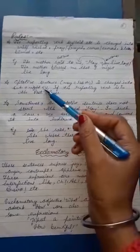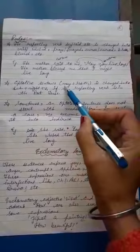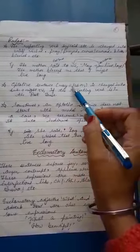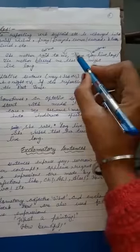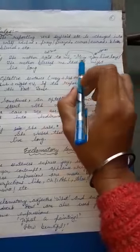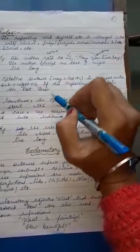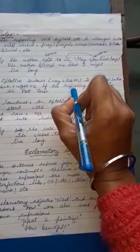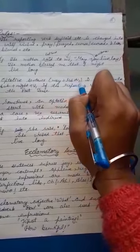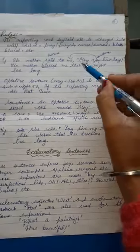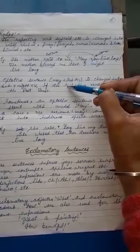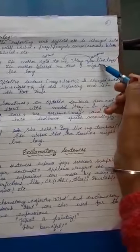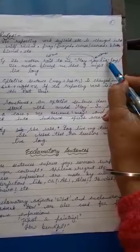Next rule is optative sentence. May plus subject plus V1 is changed. We note that like, the mother said to me, may you live long. Here we read the rule, may plus subject plus verb first form, first form of verb. May is here, then after that subject, you is here, then live. Live is first form of verb.